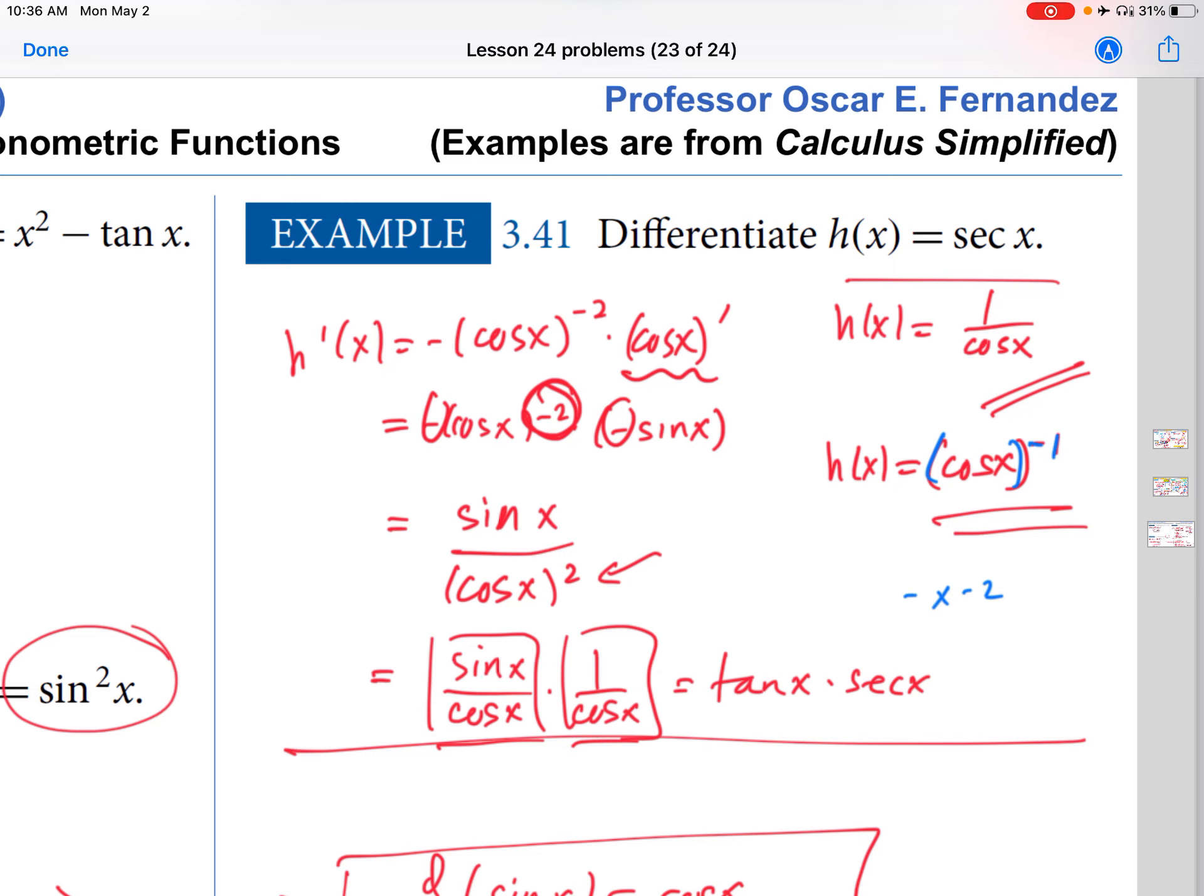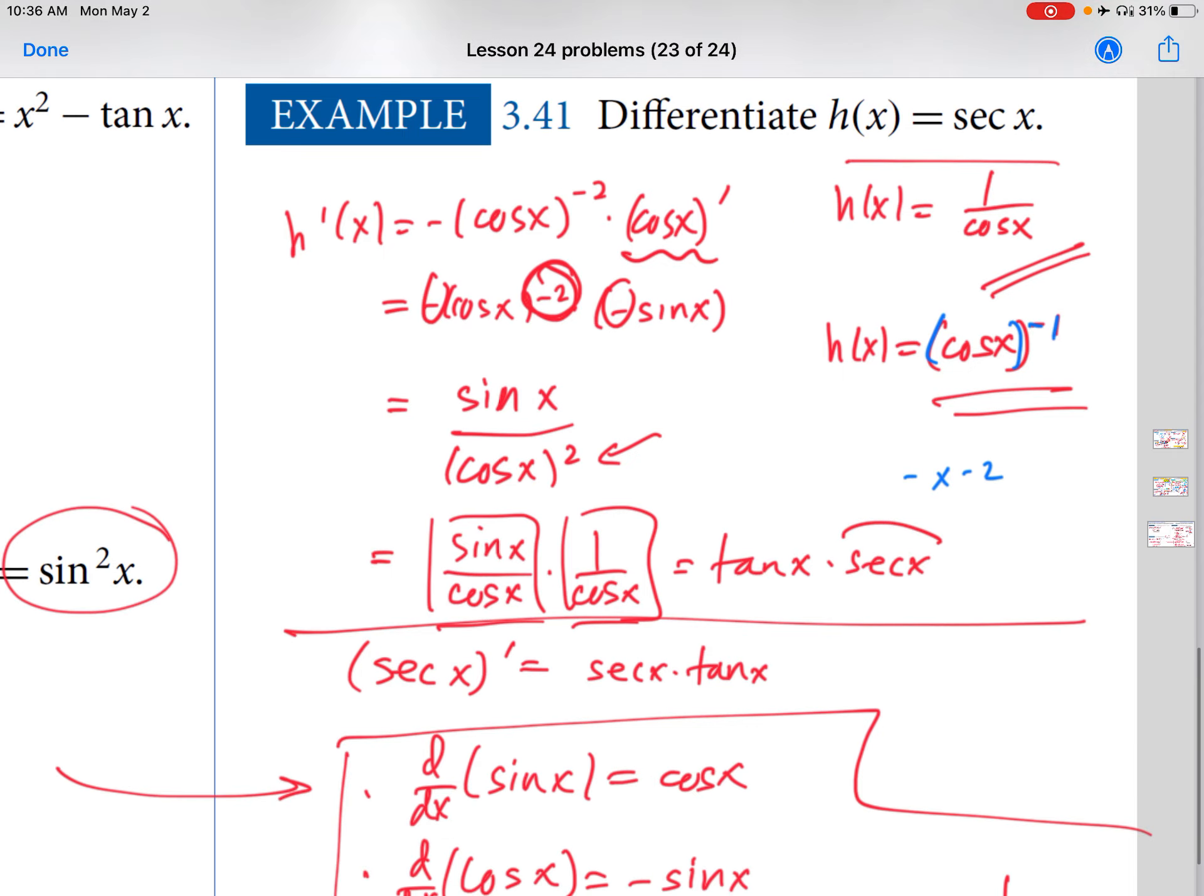And then this part is what we talked about earlier in this video. This is secant x. So conclusion, the derivative of secant x is, and you'll see it usually written as secant first, secant x times tangent x.